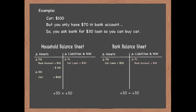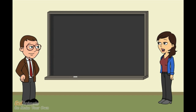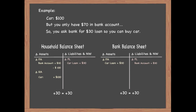Correct. The total change in assets is $30 and the total change in liabilities is the amount of your car loan, $30. This example illustrates an important point: for every financial asset, there is an equal and offsetting financial liability. The car loan is a financial liability for you, but for the bank, it is a financial asset.